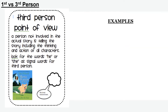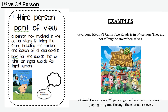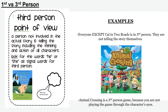That brings us to third person point of view. When a story is told in third person, the person telling it isn't directly involved in the story. He or she are signal words for third person. In Two Roads, everyone except Cal is written in third person — they are not telling the story themselves. Cal is seeing them and telling us what they are doing. To help you remember this, think about Animal Crossing. Animal Crossing is a third person game because you're not playing through the character's eyes — you see the story unfold from above.